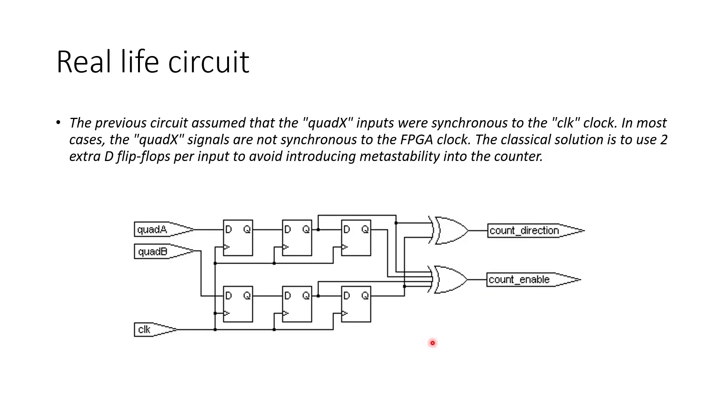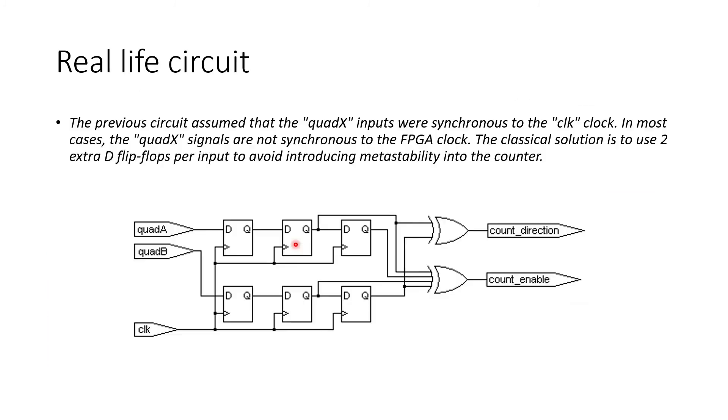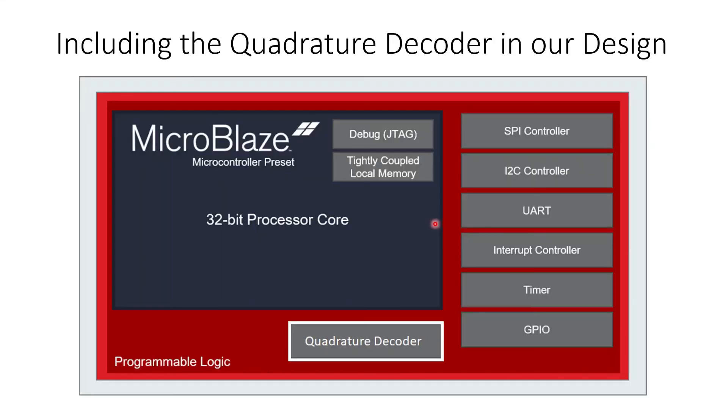Whereas in real life, the thing is that the clock will not be synchronized with the quad A or quad B. Therefore, in order to avoid the metastability in the counter, we are having some extra D flip flops to avoid the metastability in the counter. So that's it, the working of the quadrature decoder.